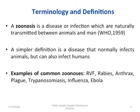A zoonosis is a disease or infection which is naturally transmitted between animals and humans. It may occur from an animal to a human or from a human to an animal. A simpler definition is a disease that normally infects animals but can also infect humans.